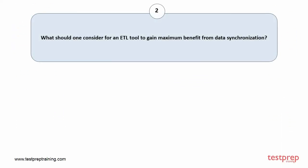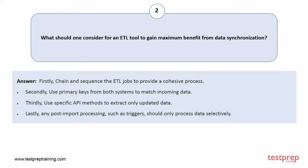Question number two: what should one consider for an ETL tool to gain maximum benefit from data synchronization? First, chain and sequence the ETL jobs to provide a cohesive process. Second, use primary keys from both systems to match incoming data. Third, use specific API methods to extract only updated data. Lastly, any post-import processing, such as triggers, should only process data selectively.